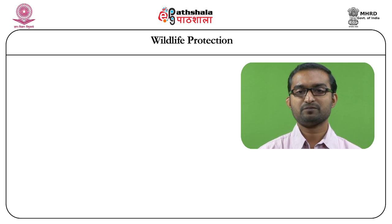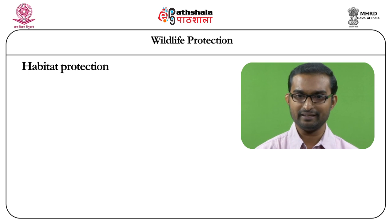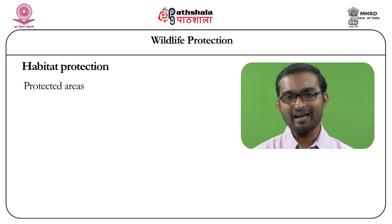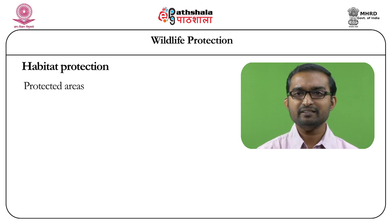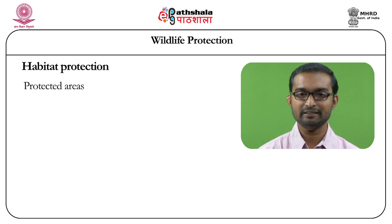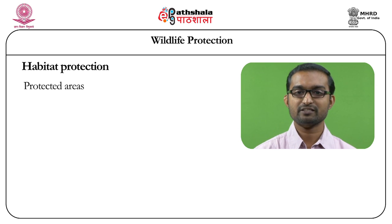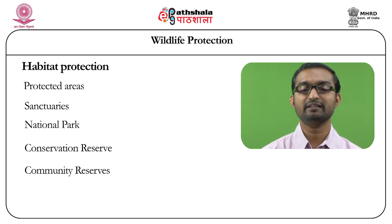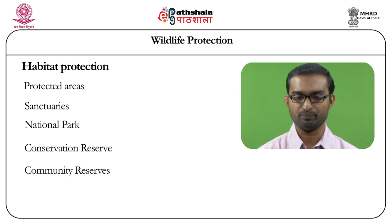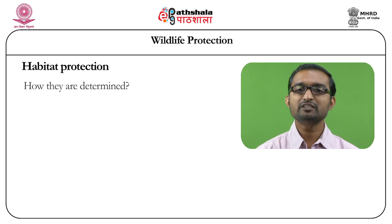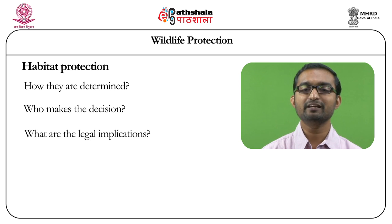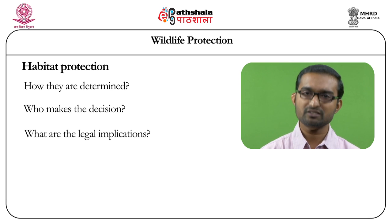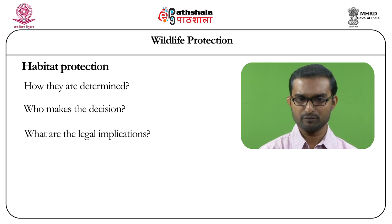Another major substantive part is habitat protection. Since habitat destruction is one of the major threats faced by wildlife in India, the Wildlife Protection Act envisages habitat protection as one of its major goals. Habitat protection is designed in the form of declaration of sanctuaries, national parks, conservation reserves, and community reserves — four kinds of protected areas envisaged under the Act. The critical questions are: how are these protected areas determined, who makes the decision, and what are the legal implications when a decision is made to declare protected areas?